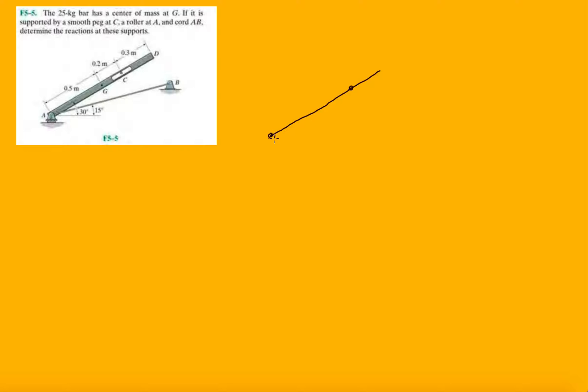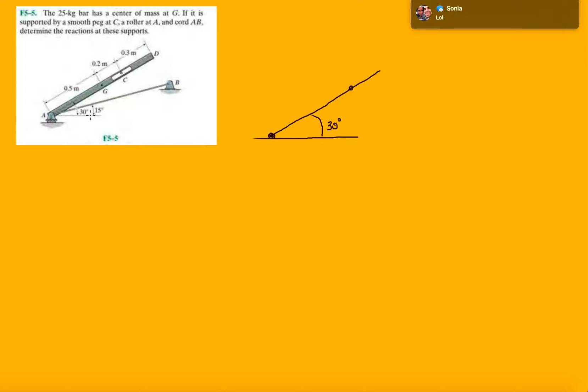Let's make it black — so this is our free body diagram. Here's C, here's A. This angle is 30 degrees with the horizontal. Don't get it confused with the tension.